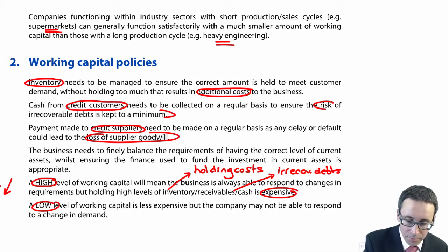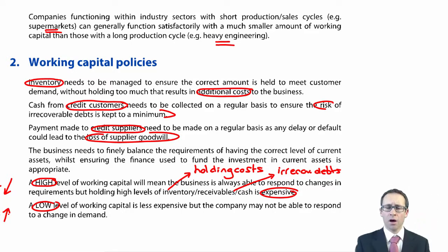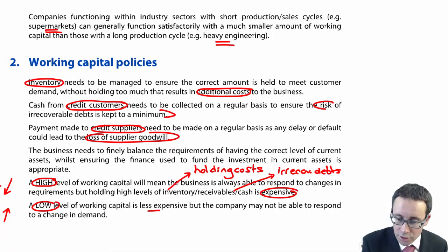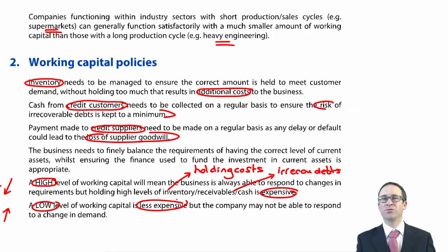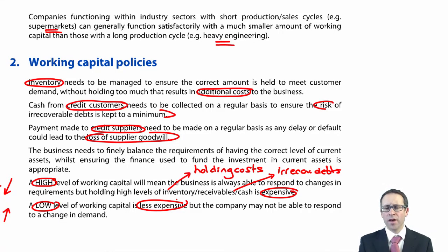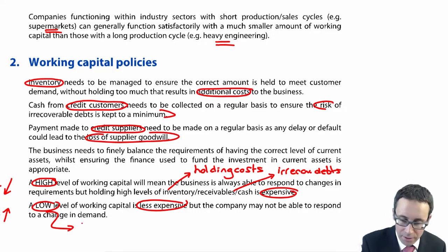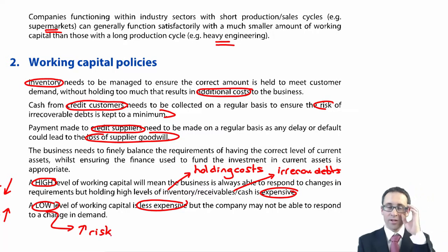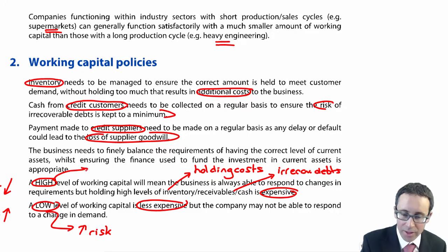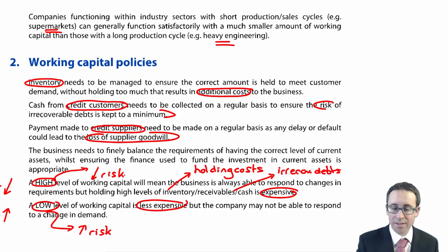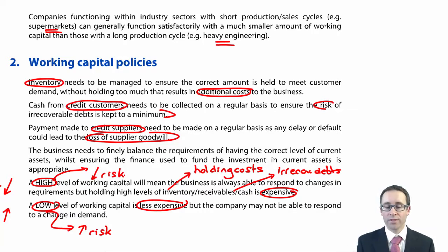Low levels of working capital usually result in higher levels of profitability because you have less holding costs, less risk of irrecoverable debts, and cash is being used to generate profits by investing and earning interest. But the issue is that if the business environment changes, you are going to struggle to adapt. So a low level of working capital gives higher profitability but an increased risk of default or illiquidity. Conversely, a high level of working capital means much lower risk — but lower risk means lower return, and the return here is talking about your profitability.